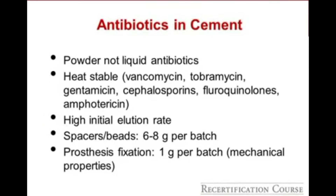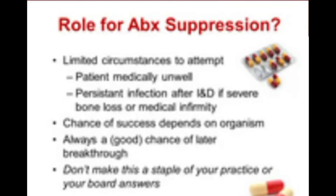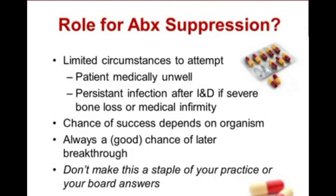When using antibiotics in cement, keep the amount low for a re-implant — less than 1 gram per batch of cement. Above that level, mechanical properties are compromised. There is limited role for antibiotic suppression for periprosthetic joint infection.